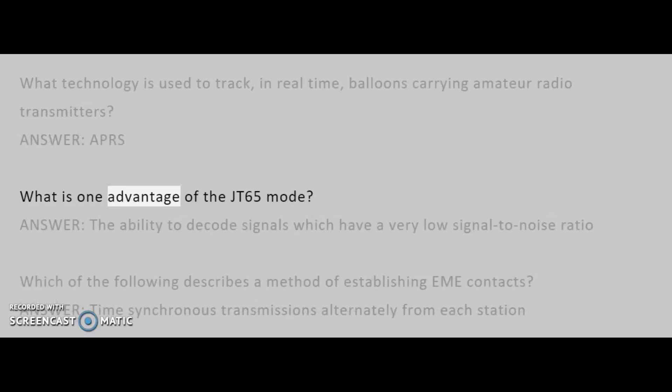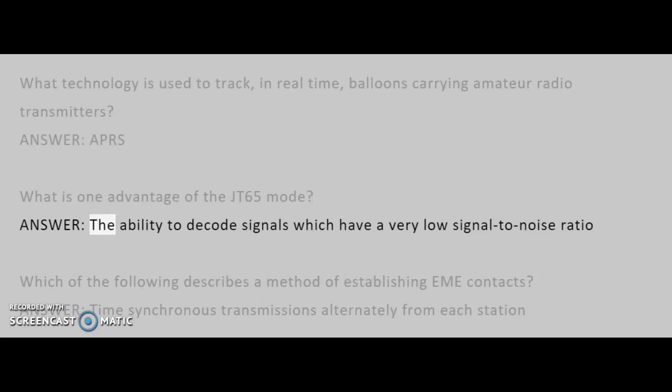What is one advantage of the JT65 mode? Answer: The ability to decode signals which have a very low signal-to-noise ratio.